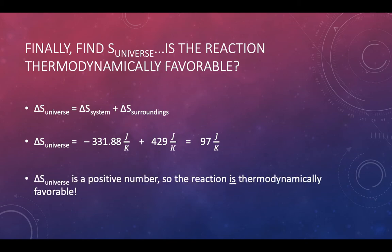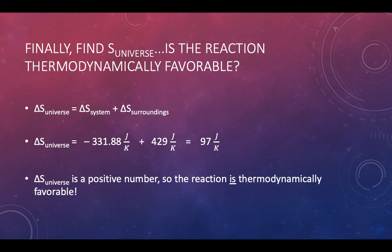Because the delta S of the universe is positive at +97 J/K, the reaction is thermodynamically favorable — it will happen spontaneously. You might not expect this since we're going from three moles of gas to one mole of liquid, making something very structured out of something chaotic. However, the surroundings become so much more disordered as a result of this exothermic reaction that it ends up being a net win for the universe, and we can declare the reaction thermodynamically favorable.